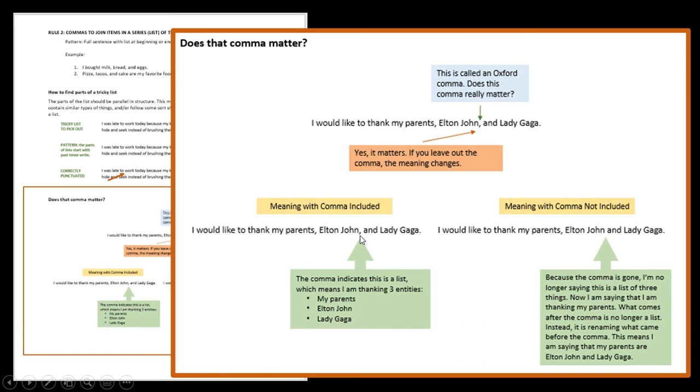This comma is a signal to the reader that this is the last part of the list and that it is a list of multiple individual things. In this case, it's a list of three entities. My parents, number one, Elton John, number two, Lady Gaga, number three. Okay. So that's how we usually read it. But here's the funny, interesting part. If you leave that comma out, you're not telling me you have a list anymore. What you're telling me is this last part, it's not a list. What it's doing is it is renaming what came before, which is my parents. So by leaving that comma out, you are actually saying, I would like to thank my parents, who are Elton John and Lady Gaga, which would be awesome, but weird, and not what I meant. So that comma matters.